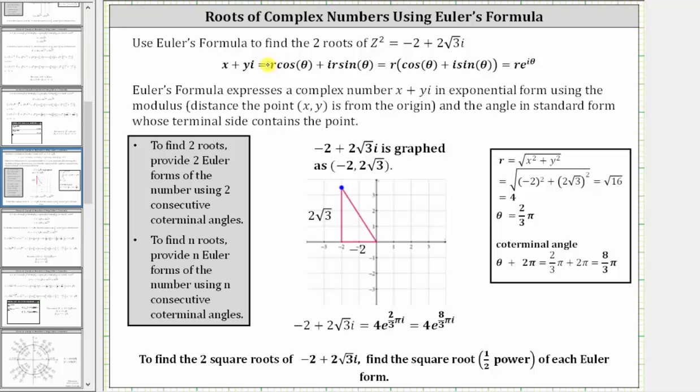Using Euler's formula, we want to find the two roots or two complex solutions of c squared equals negative two plus two square root three i.